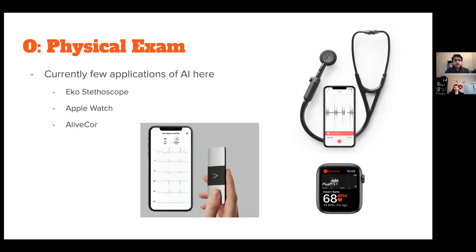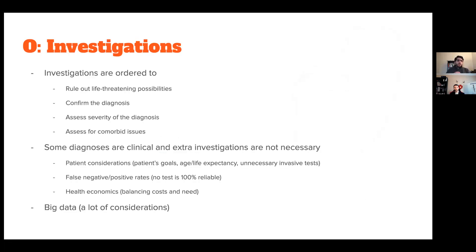AI applications for physical exam include the Echo stethoscope, which connects to a mobile app, records sounds, and can detect things the human ear might miss. The Apple Watch gives heart rate and can do ECGs. The Eko Core also gives ECG and heart rate, handy for physical exams. We also collect visual, auditory, tactile, and functional data — all of which goes into the patient's chart as text, with the differential diagnosis list narrowed further.